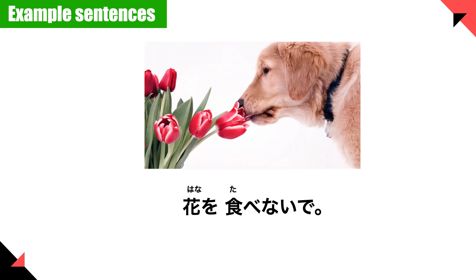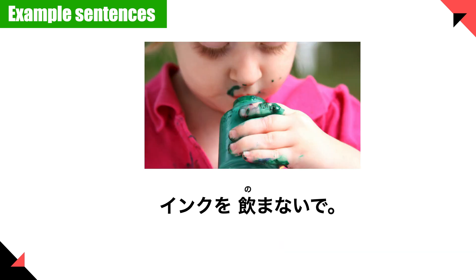Next example sentence: 花を食べないで — don't eat flowers. Next example sentence: インクを飲まないで. インク means 'ink,' so don't drink ink. Oh, please don't.